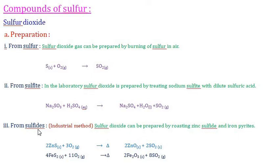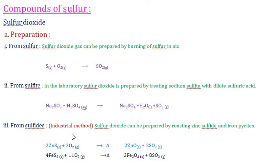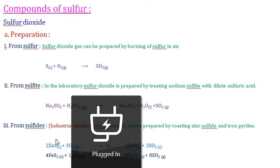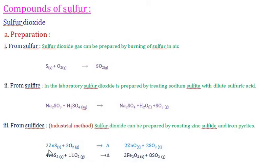Third method — from sulfides: when zinc sulfide or iron sulfide (iron pyrite) reacts with oxygen, sulfur dioxide is eliminated along with the formation of zinc and iron oxides. Out of these three methods, the industrial method using iron pyrite is the most commonly used for the preparation of sulfur dioxide.